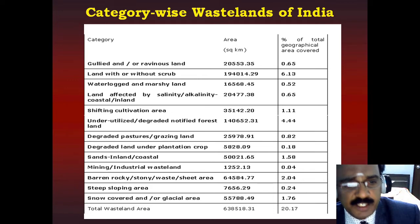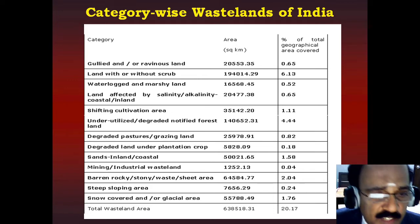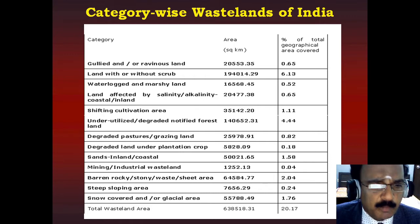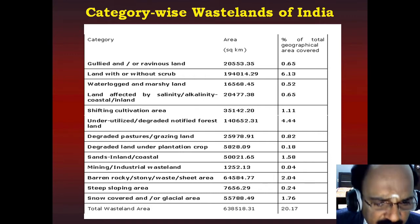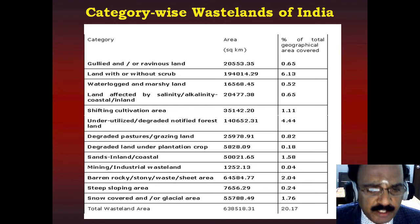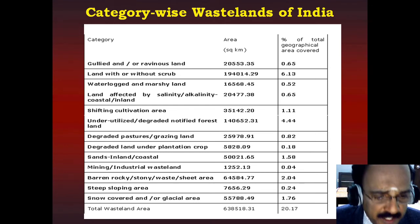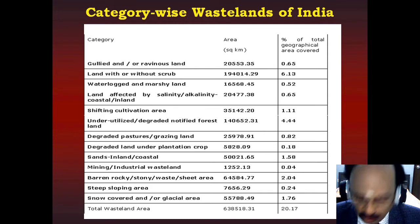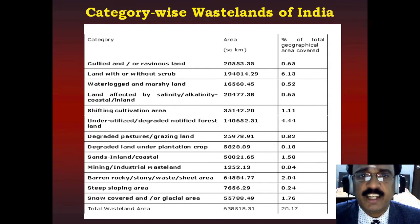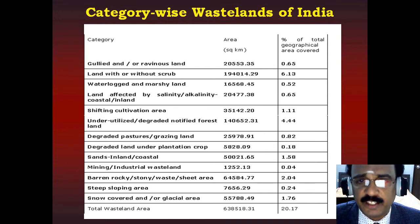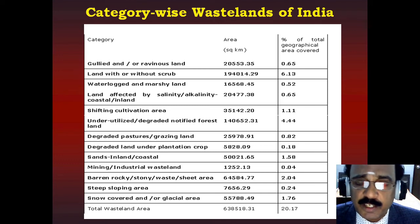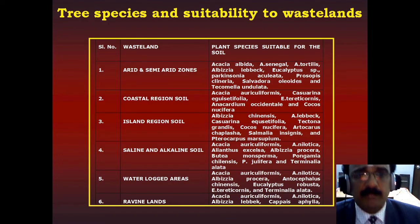We can use all these lands productively. The various types of wasteland soils affected include pasture and grazing land, mining areas, sand mining areas, industrial waste areas, barren rocky and stony areas, steep slope areas, and snow-covered areas. All these areas can potentially be utilized for the production of biomass through energy plantation.